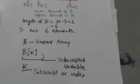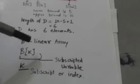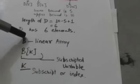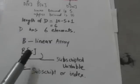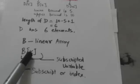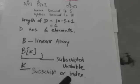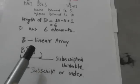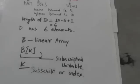Now consider element BK of linear array B. Here the number K is called the subscript or index, and BK is called the subscripted variable.